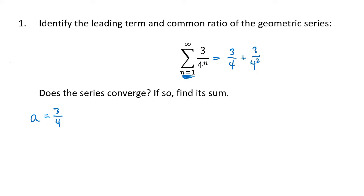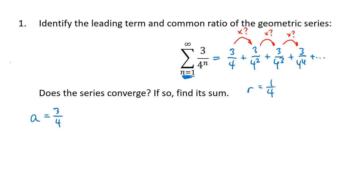If we keep writing terms we get 3 over 4, 3 over 4 squared, 3 over 4 cubed, 3 over 4 to the fourth, and so on. The common ratio is what you multiply by to get from each number to the next — that's what characterizes a geometric series. In this case the top of the fraction stays 3, but the bottom gets multiplied by 4 each time, which means the common ratio is 1 fourth. Geometric series converge if the absolute value of r is less than 1, and diverge otherwise. Since r is 1 fourth and |1/4| < 1, this series converges.